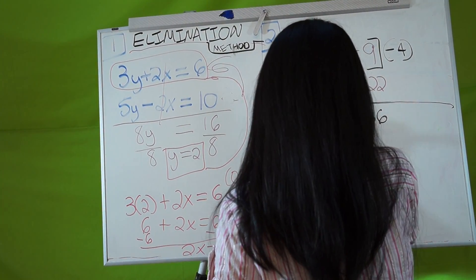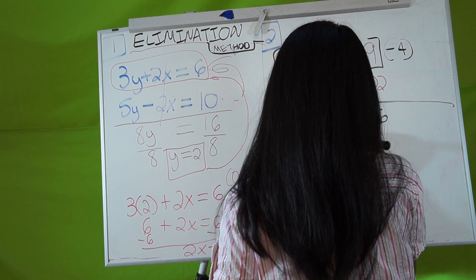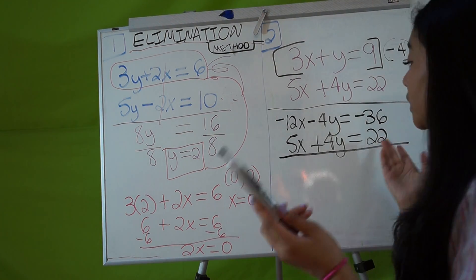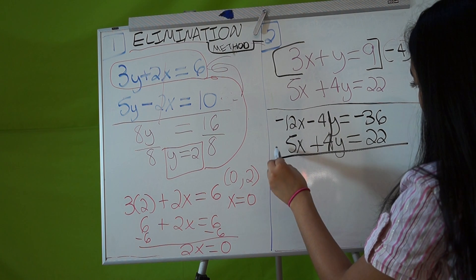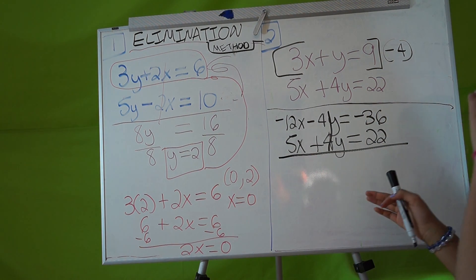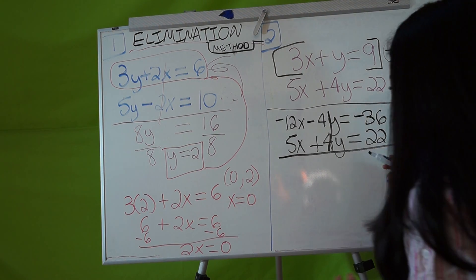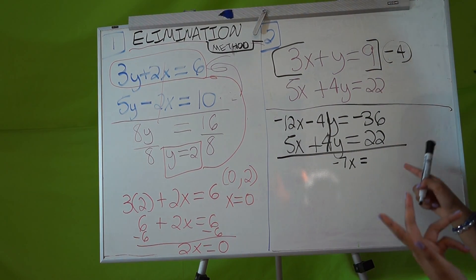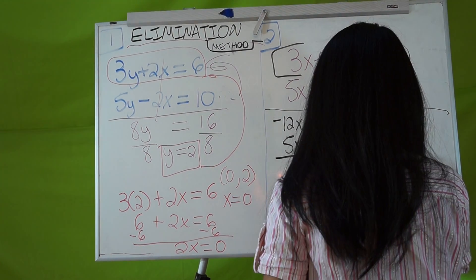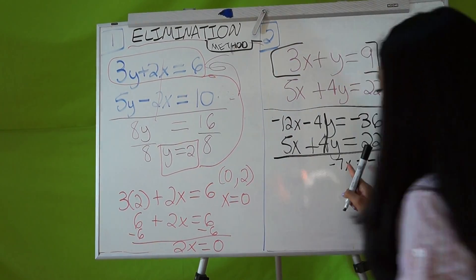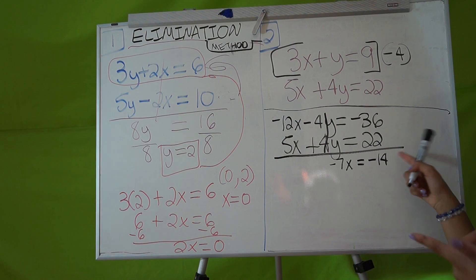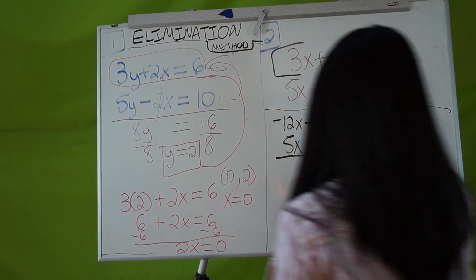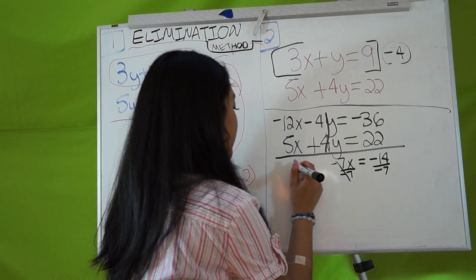Now it's easier to eliminate. We can eliminate the 4y terms and we'll have negative 12x plus 5x, which is just negative 7x. Then minus 36 plus 22, which is negative 14. Divide both sides by negative 7 and you get x equals positive 2.